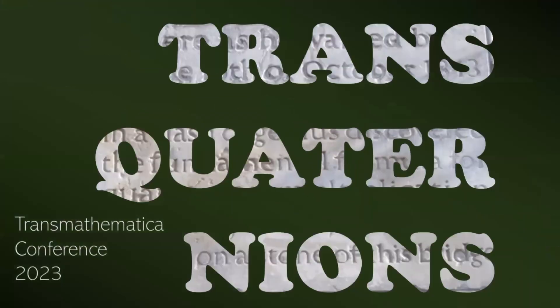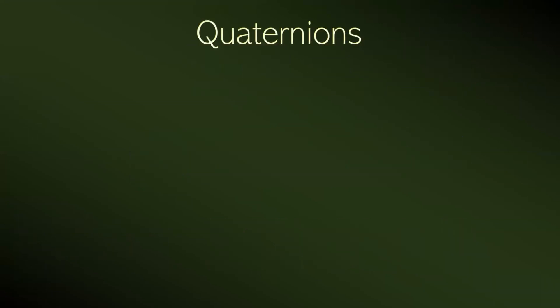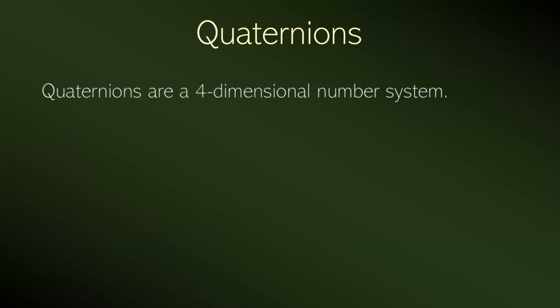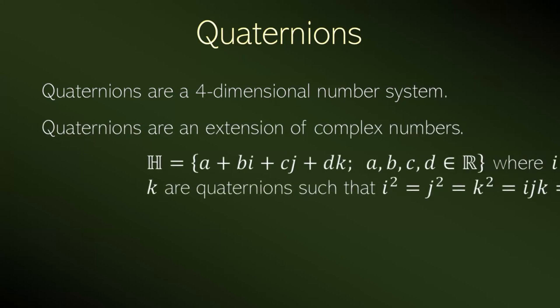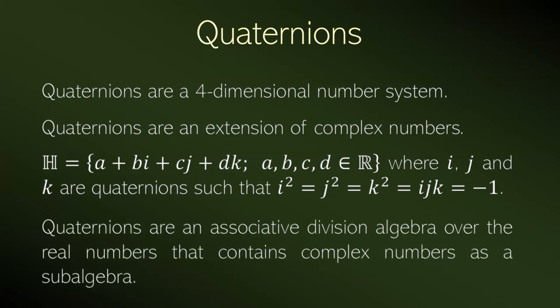I will start with a short introduction about quaternions. The quaternions are a four-dimensional set of numbers and they are an extension of complex numbers. They are defined similarly to complex numbers with a real part, but they have three imaginary parts because they are four-dimensional, and they have three imaginary units. Quaternions are an associative division algebra. That means they have an addition operation that is commutative and associative, and a multiplication that is associative but not commutative.